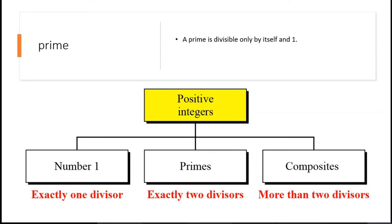Positive integers can be thought of in two ways. First, the number 1, which has exactly one divisor. Then primes, which have exactly two divisors — the number itself and one. And composite integers, which have more than two divisors.